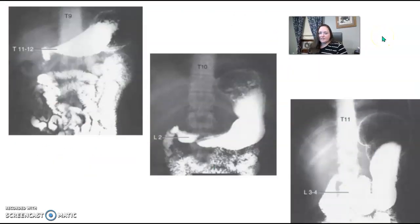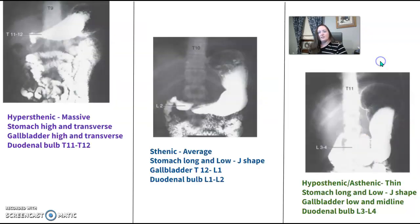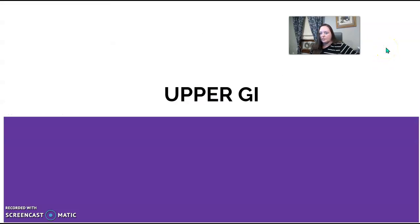What if it's just a picture of the stomach itself? Knowing these body habitus types can help you figure out where the anatomy is lying. The first stomach looks sideways — lying transverse — with the duodenal bulb way up in the T11, T12 range. The next is a little lower at L2, and you can see the J-shaped stomach with the L3, L4 location — that's your hyposthenic patient. The sthenic is your more average, and the hypo or asthenic is long, down, and in.